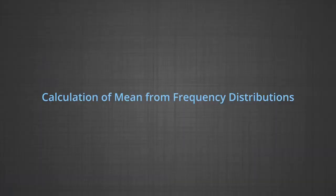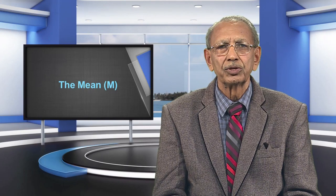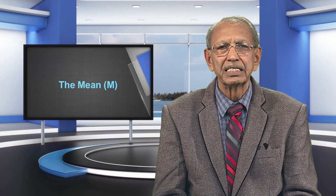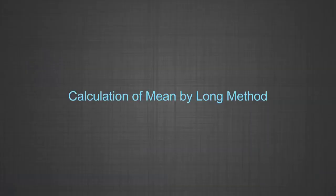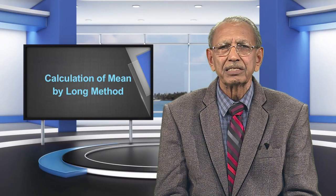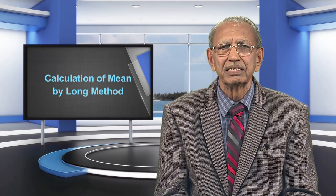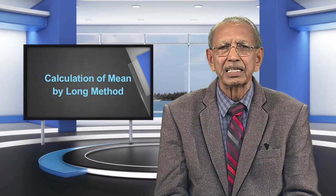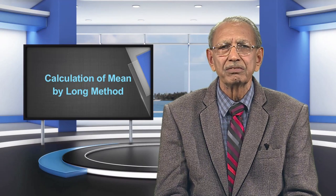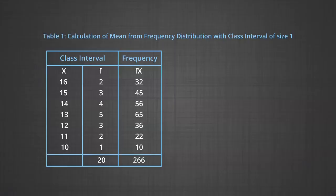Calculation of mean from frequency distributions. When scores or measurements have been arranged in the form of a frequency distribution showing class intervals and frequencies, the following methods are used. We are going to show the calculation of mean by the long method. Take a look at Table 1, which shows the calculation of mean from a frequency distribution with class interval of size 1. It has three columns.